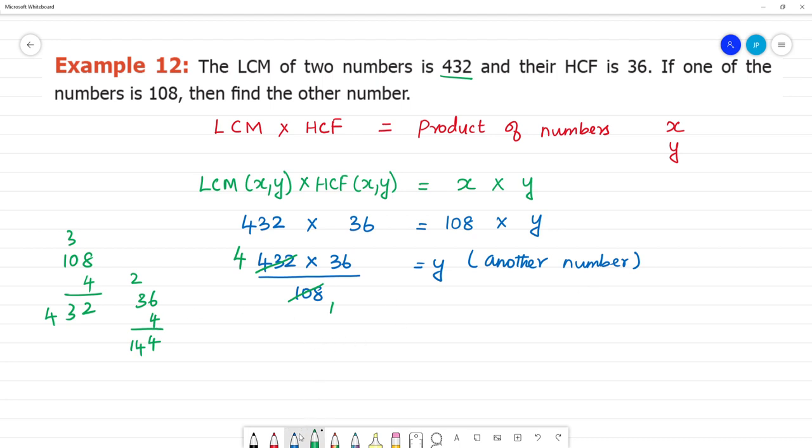So what is the another number? The another number is equal to 36 multiplied by 4 is 144. Clear?